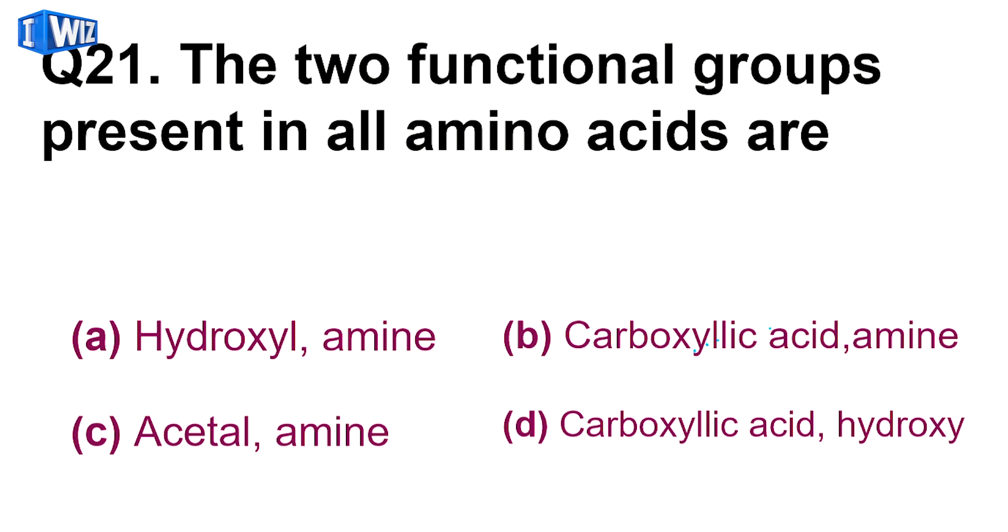Then, the two functional groups present in all amino acids are - dekhiye, jib aap amino acid bantate ho, isi ke nama se hii pata chal jata hai, ki isme ek taraf hoona hai amine group, aur ek taraf hoona hai acid group. So doh functional group joh aapko isme amino acid mein mil rhe hai, woh hai NH2 aur COOH. NH2 ko bolte hai amine, aur COOH ko bolte hai carboxylic acid. So B will be the correct answer.